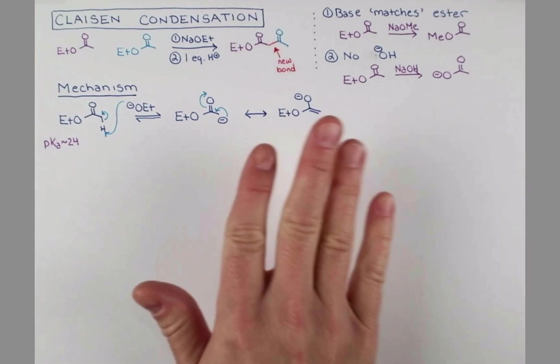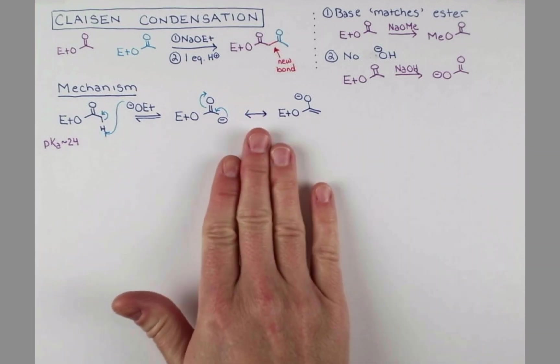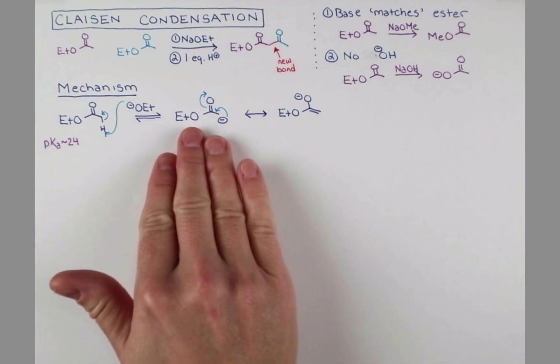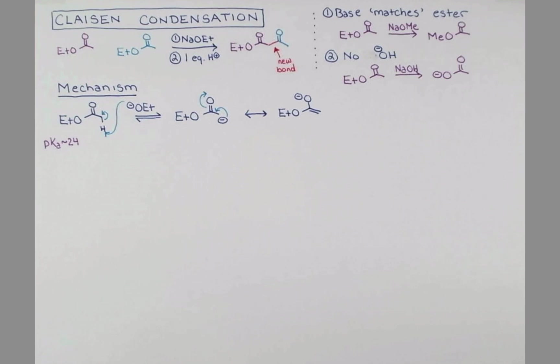Now it doesn't really matter if we show this form or this form of the enolate, because these are resonance structures. Both of these contribute to the overall structure. And us drawing this and this is just our best way of representing on paper what the enolate looks like. It's actually somewhat intermediate to these two structures.